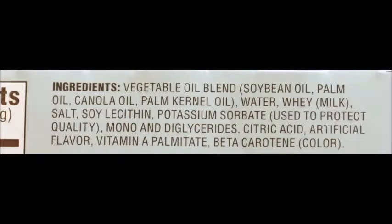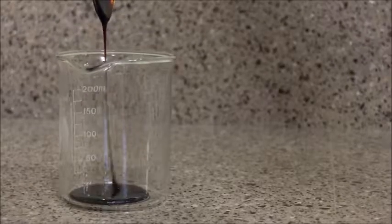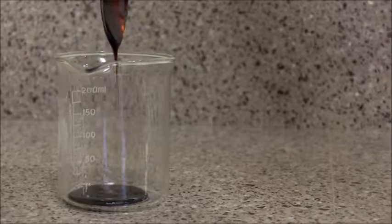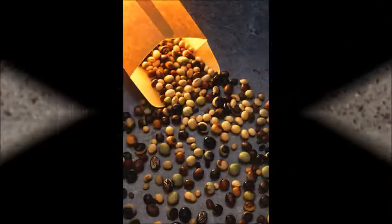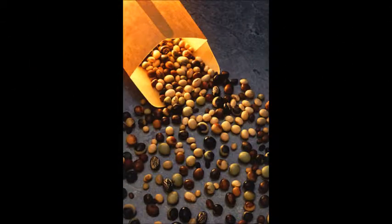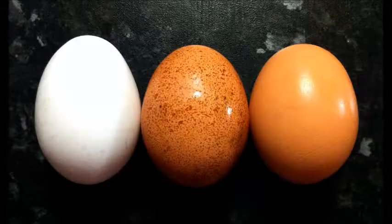When you check the ingredient label of some food products, such as salad dressing or chocolate, you may notice the ingredient lecithin, or soy lecithin. Lecithin is found naturally in many different foods, such as soybeans, sunflower, meat, and eggs.